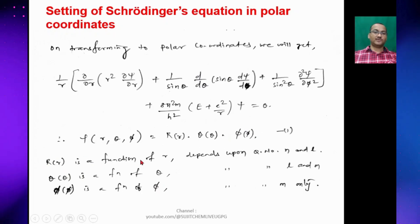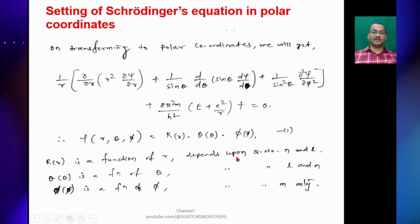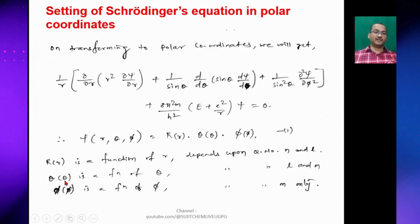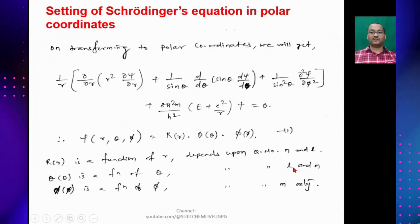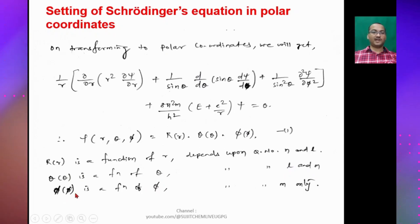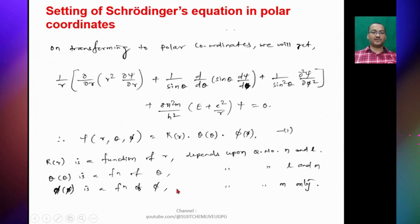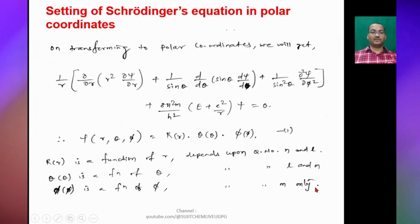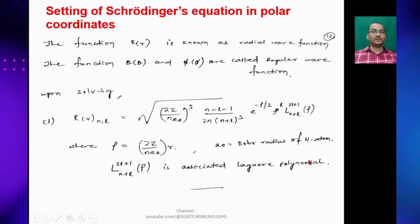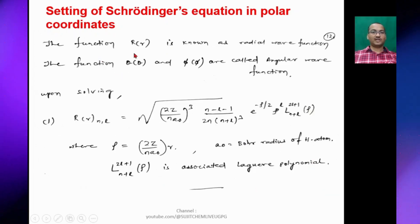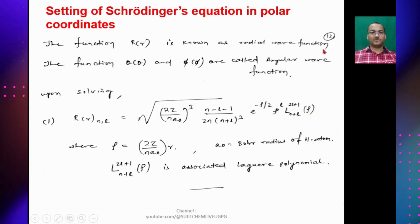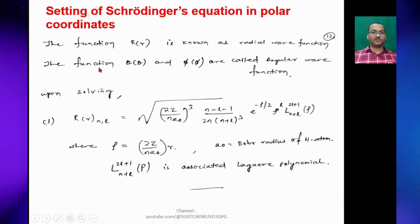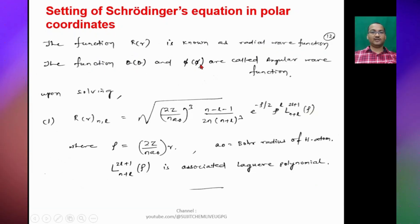R(r) is the radial wave function, which depends on quantum numbers n and l. Θ(θ) is the theta function, which depends on l and m. Φ(φ) is the phi function, which depends on quantum number m only. The function R(r) is known as the radial wave function, and Θ(θ) and Φ(φ) are called the angular wave functions.